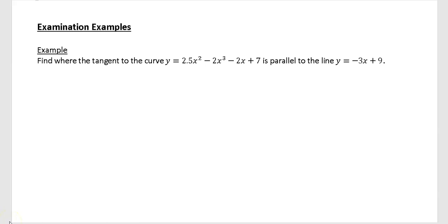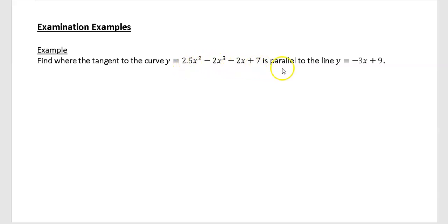In this video we're going to look at three examples — just examination-style examples on tangents and normals. In this one it says: find where the tangent to the curve y equals 2.5x squared minus 2x cubed minus 2x plus 7 is parallel to the line y equals minus 3x plus 9.